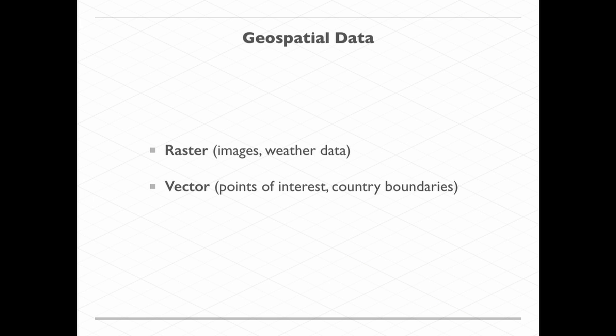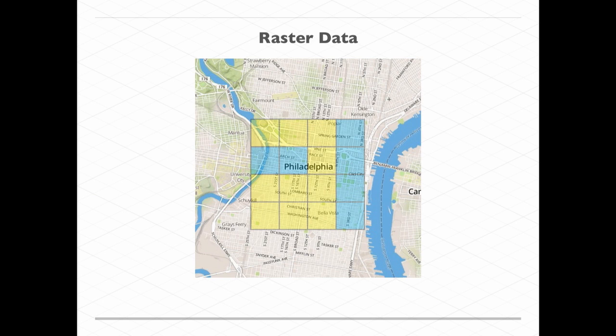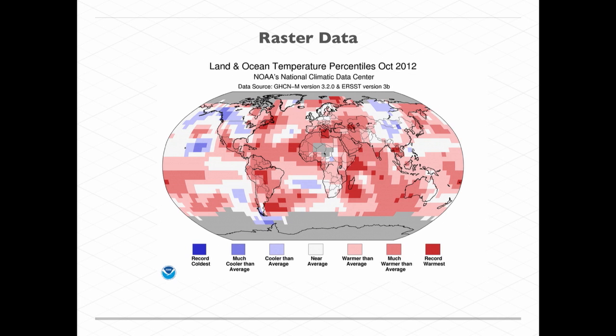Looking at raster data first — it's a matrix of cells that can be any values. The geospatial aspect is when we take this and put it over a location. Now we can use those values to say Philadelphia is on the east coast. Another example of raster data is satellite imagery, which can have three bands that combine into an RGB image. This is a Landsat image that has 11 different sensors and 11 different bands for each scene.